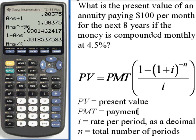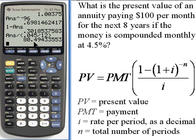Once again, i is the rate per period, so that's 0.045, the rate per year, divided by the number of periods, which was 12, and we get 80.49.